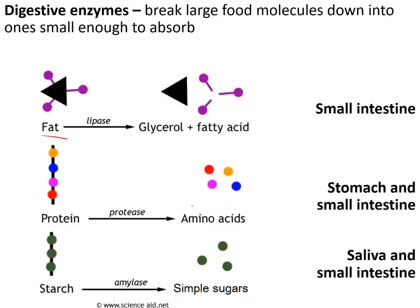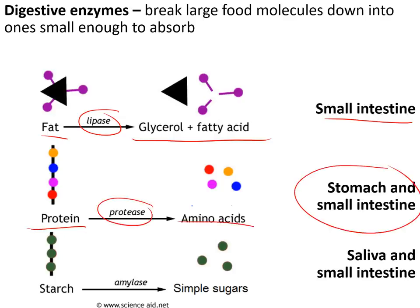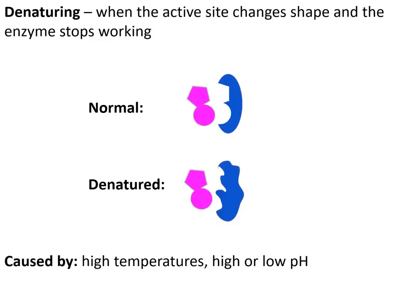A particular type of enzyme is digestive enzymes. Fat is digested into glycerol and fatty acids by an enzyme called lipase, and that happens in the small intestine. Proteins are digested into amino acids by an enzyme called protease, and that happens in the stomach and small intestine. Starch is digested by an enzyme called amylase into simple sugars. The whole point of digestion is to break large food molecules down into ones small enough to absorb into the blood.